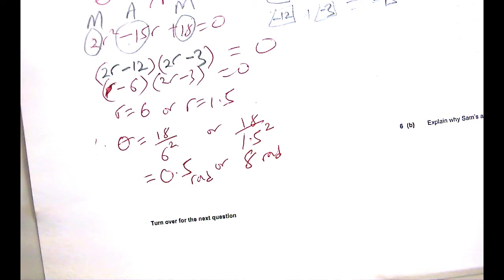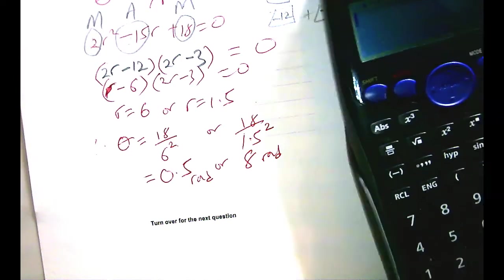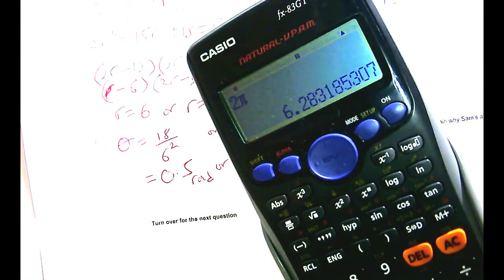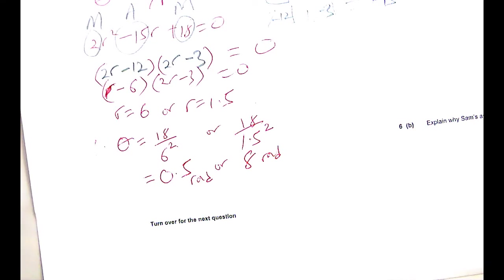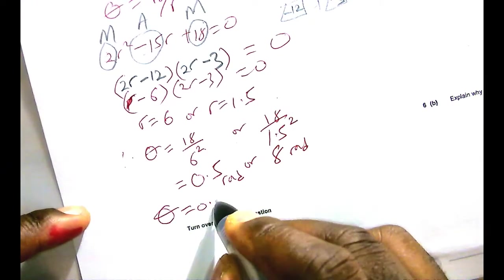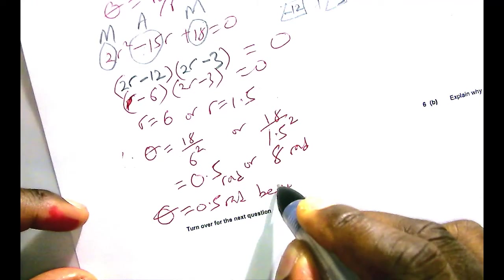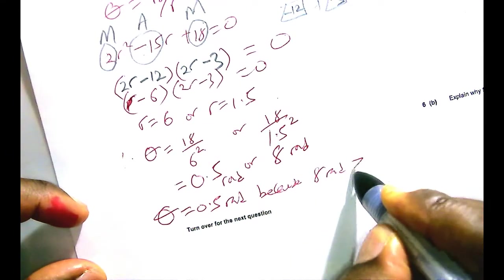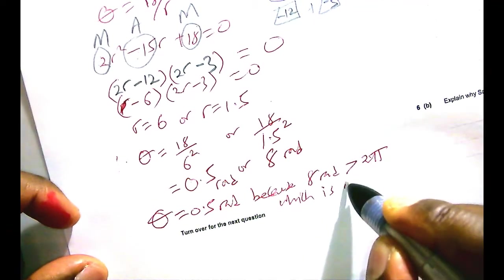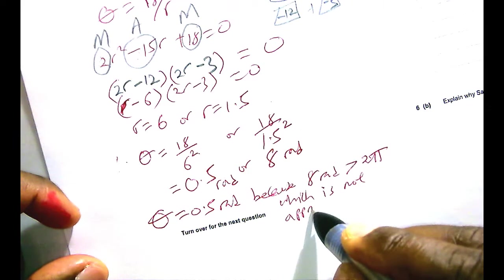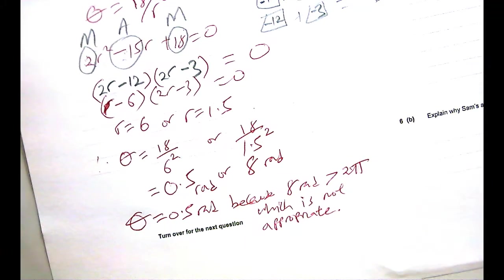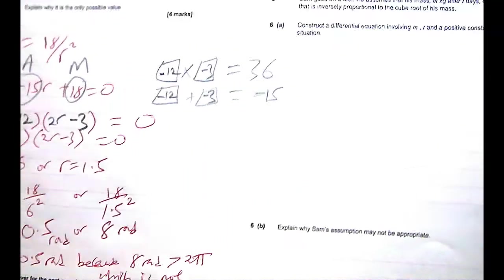And so, is 8 rad greater than 2π? Let's see. 2π is just there on the calculator, right? So that's 6 point something, 6.28. And 8 rad is just so greater than 2π. So θ is 0.5 rad because 8 rad is greater than 2π. It's not an appropriate answer to say 8 rad because that's greater than 2π.